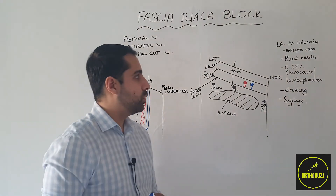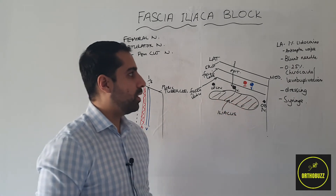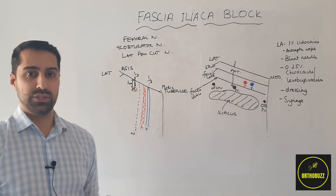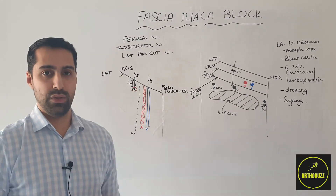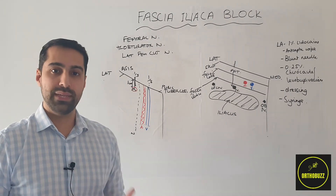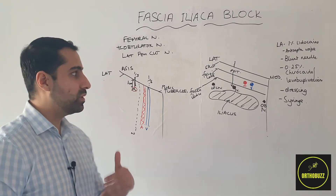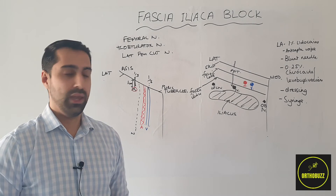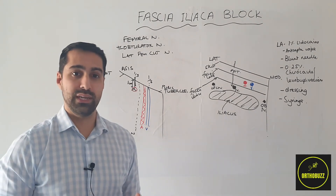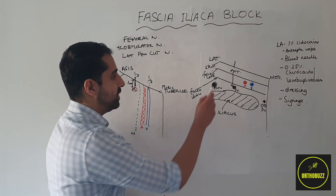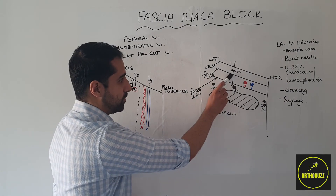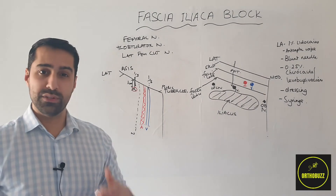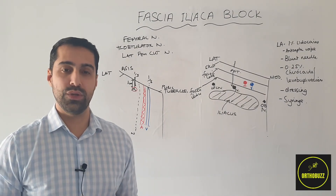Once that's worked, we draw up our local anaesthetic — 0.25% levobupivacaine — into our syringe and place a blunt needle on the end. The reason we use a blunt needle is because we want to feel when we're into the fascia iliaca compartment. This will be felt as characteristically two pops: the first pop when going through the fascia lata, and the second through the fascia iliaca. It is easier to feel those two pops with a blunt needle.